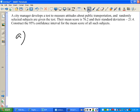So the city manager develops a test to measure attitudes about public transportation and randomly selected subjects are given the test. Their mean score is 76.2 and their standard deviation is 21.4. I'm thinking there's 49 in there somewhere. Randomly selected 49 subjects, is that right? All right, that's 49, clearly.